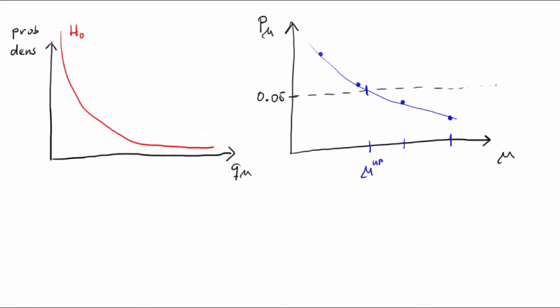Also note that we should get negative upper limit on mu in fraction alpha of cases. Whenever q-sub-mu picked from f of q-sub-mu given 0 is in the high tail of this distribution, tail that has an integral of alpha, the curve for p-value as a function of mu doesn't cross the line at alpha for any positive mu value.